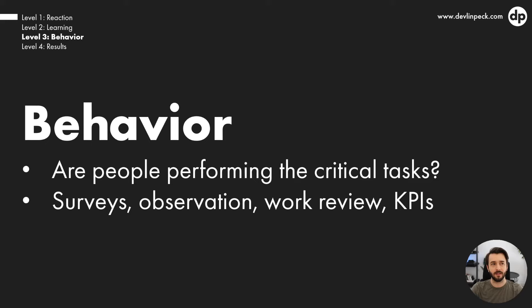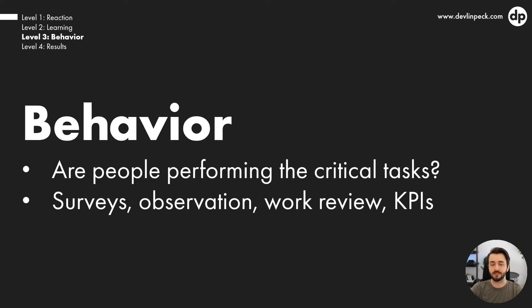You can use surveys for level three — for example, surveying people's managers about how their employees are performing. Observation is also common, where managers observe employees to see if they're using new skills or knowledge. Work reviews are another option. You can also look at KPIs; for instance, if you're working at a call center and you taught people to use screen sharing, you would look at that screen sharing KPI to see if people are actually using this new skill.